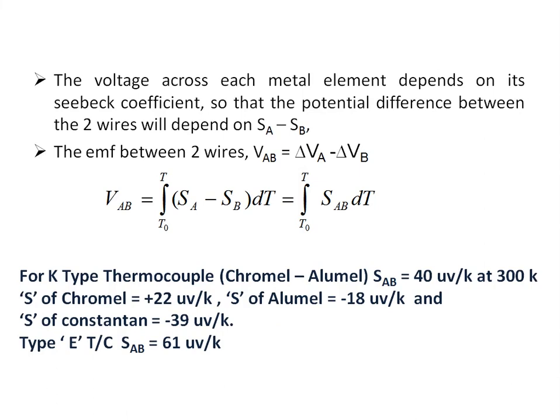The potential difference between the two wires depends on S_A minus S_B, since we are measuring the EMF between the two wires. The EMF between two wires is given by V_AB = ΔV_A − ΔV_B, where V_A is the potential induced in one wire and V_B is the potential induced in the other wire. So V_AB = ∫(T₀ to T) (S_A − S_B) dT = ∫(T₀ to T) S_AB dT.